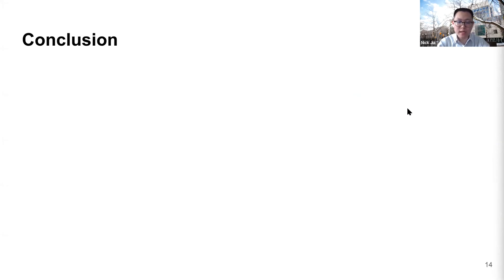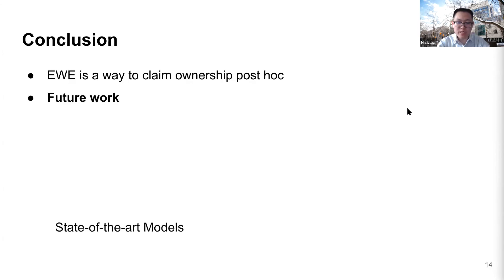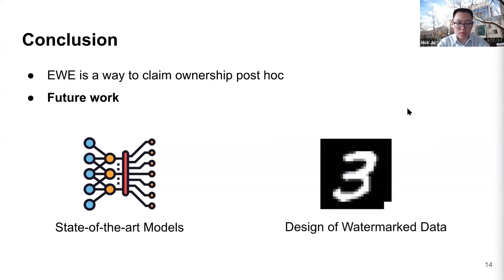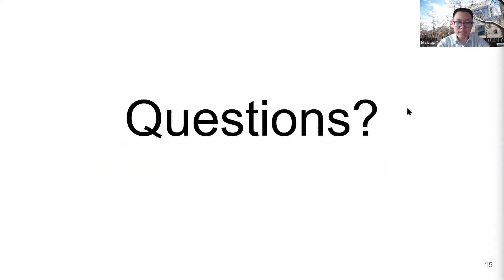In conclusion, preventing model extraction is hard, so we propose the entangled watermark as a way to claim ownership post hoc. It is robust against model extraction and several other attacks due to the entanglement in the representation space. Regarding limitations and future directions: the representation space of state-of-the-art DNNs is very complicated, and the proposed method achieves worse performance on such models, so scaling entangled watermarks is one of the next steps. The design of watermark data is also worth exploring — the simple example we gave may confuse high-capacity models since the image looks too similar to a real digit 3. Improving the design could help achieve better performance. I'll be happy to answer any questions. Thank you.